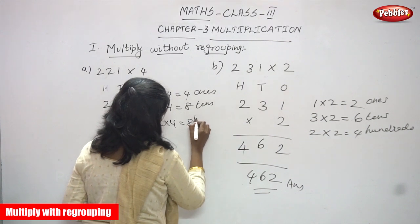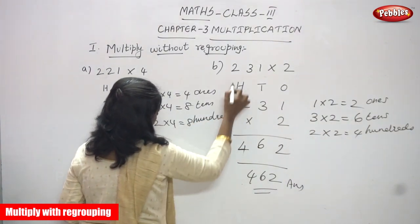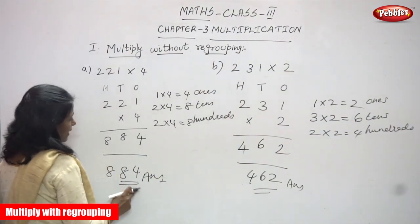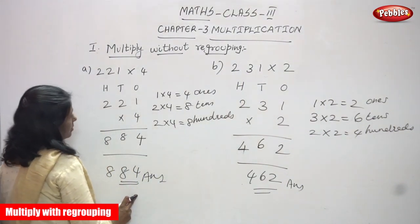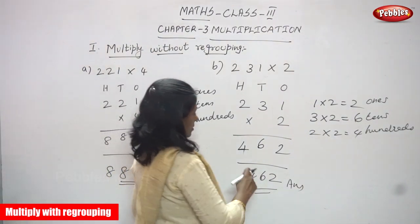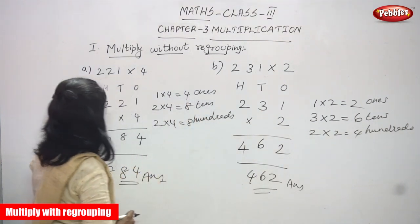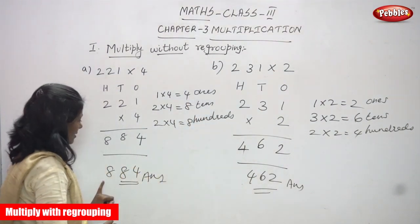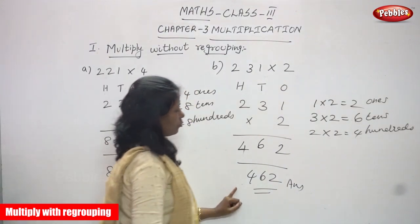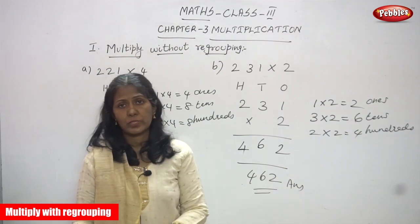So the first question answer is 884 and the second answer is 462. These are the right answers for both questions.